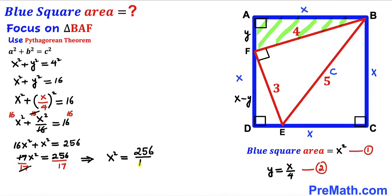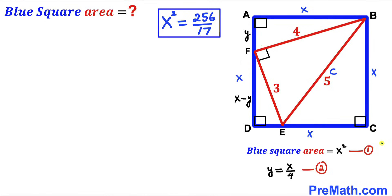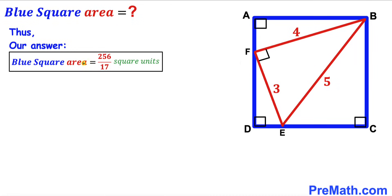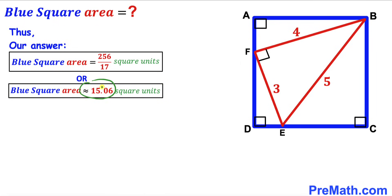For the final step, returning to equation one, the area of the blue square equals X². Substituting our result X² = 256/17, the blue square area is 256/17 square units, which is approximately equal to 15.06 square units. That is our final answer.